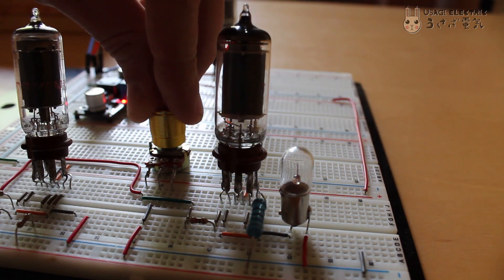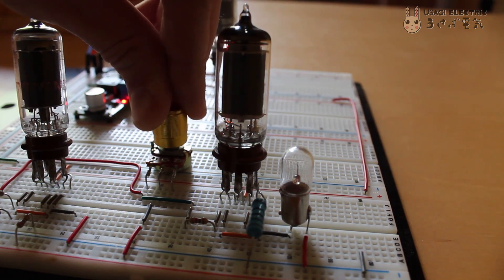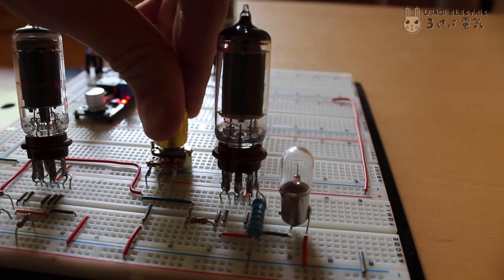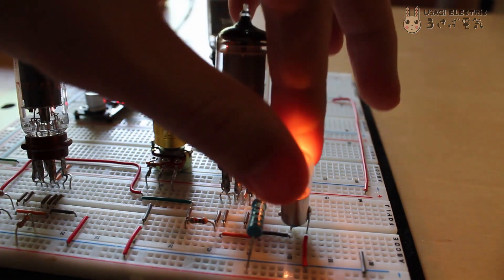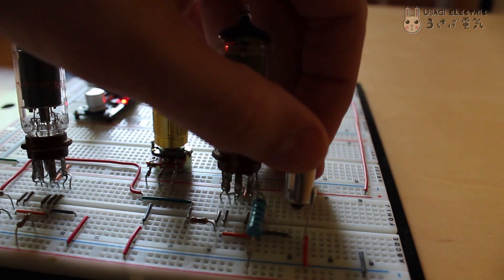As I increase the grid voltage on this 2D21 argon-filled thyrotron, no current flows until the thyrotron ignites, which then allows enough current to illuminate this very power-hungry halogen bulb.